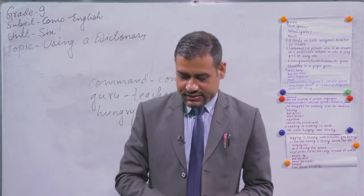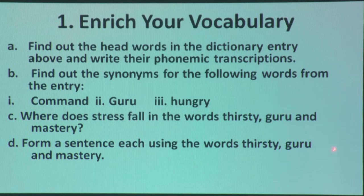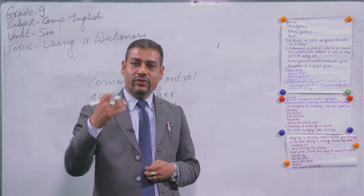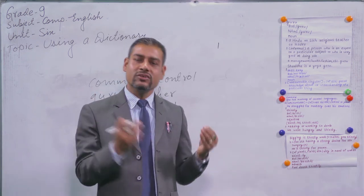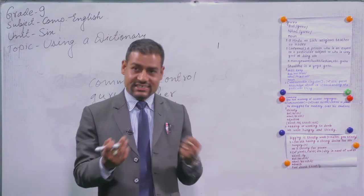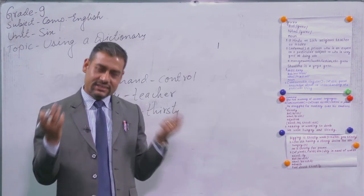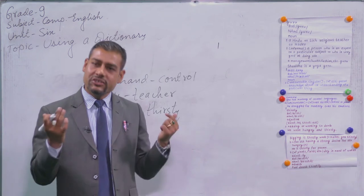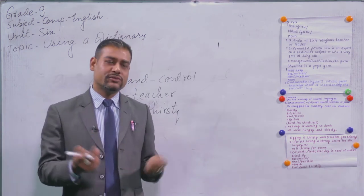Question D: form sentences using the words thirsty, guru, and mastery. This is your class assignment. For example: 'There is a thirsty crow.' For the remaining words, guru and mastery, you have to make sentences yourselves.